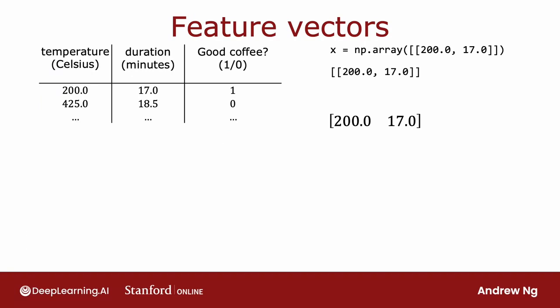So going back to our original example, for the first training example in this data set, which features 200 degrees Celsius and 17 minutes, we would represent it like this. And so this is actually a 1 by 2 matrix that happens to have one row and two columns to store the numbers 200 and 17. And in case this seems like a lot of details and really complicated conventions, don't worry about it, all of this will become clearer. And you get to see the concrete implementations of the code yourself in the optional labs and in the practice labs.